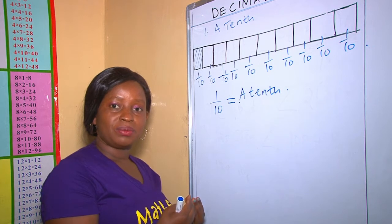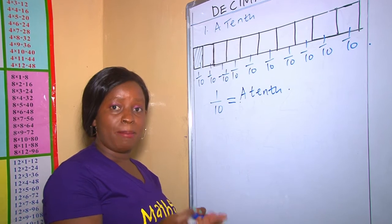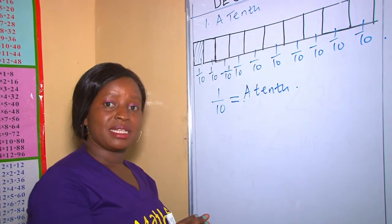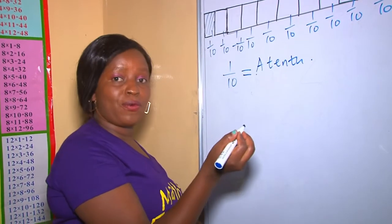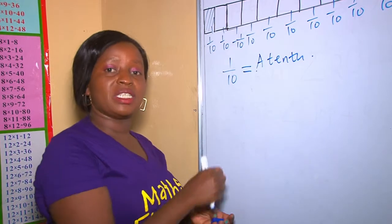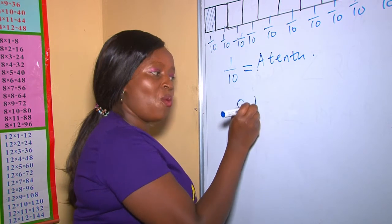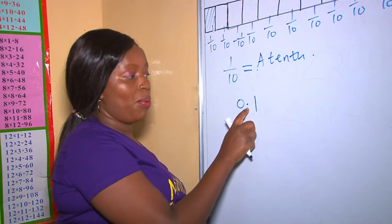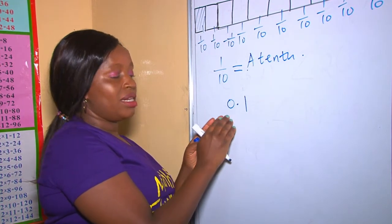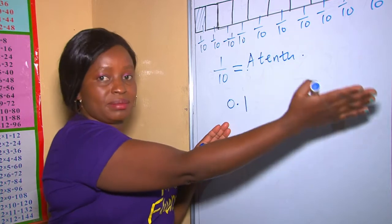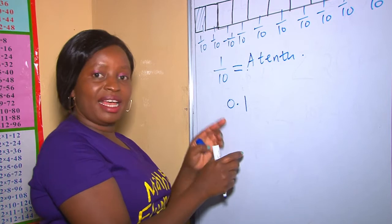A decimal is a point placed in between numbers. It separates numbers to the left and numbers to the right. Therefore, this 1 written as a decimal is going to be 0.1, meaning that the numbers that are on the right are less than the numbers that are on the left.